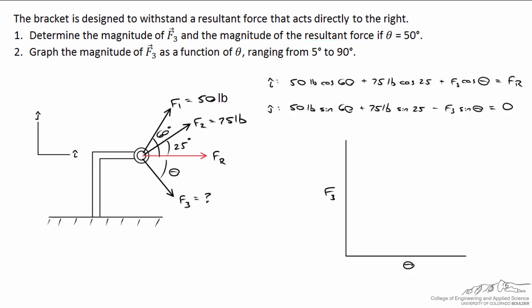Let's go on to the second part of the problem, where we want to make a graph of the magnitude of F3 as a function of theta. So what we want to look at is theta ranging from 5 degrees down to 90 degrees. If I simply looked at the equation, if I rearranged this expression and solved for F3, what I would find is I would have the sine of theta in the denominator. If theta was a really small value in the denominator, a large value for F3, and if theta approaches 90 degrees, the sine of theta would approach 1, and we would see a mathematical expression that would look something like this.